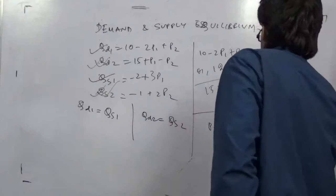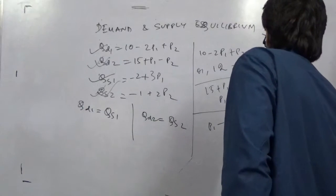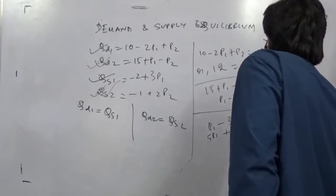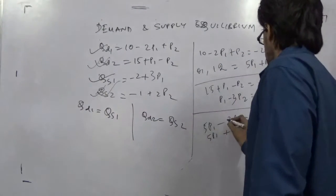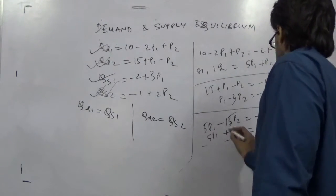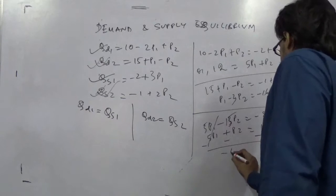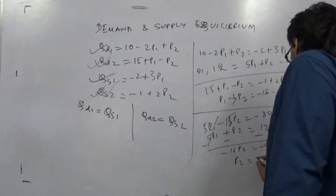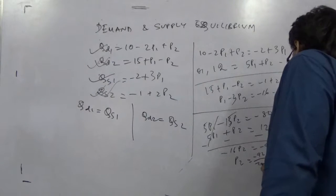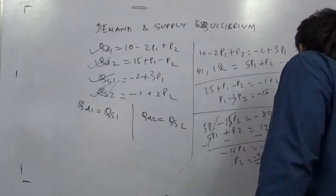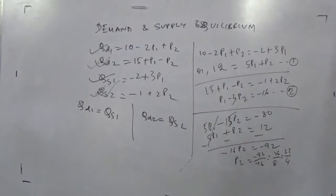The other job is to solve them only. I am solving them. 5p1 minus p2 equals minus 16 and 5p1 plus p2 equals 12. Multiplying with 5, this portion gone. Minus 16p2 equals minus 92, so p2 equals 92 by minus 16, that is 46 by 8, that is 23 by 4. Price of second good is 23 by 4.